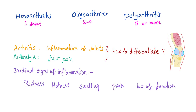How do you differentiate between arthritis and arthralgia? Use the physical exam and the cardinal signs of inflammation: redness, hotness, swelling, pain, and loss of function — in Latin: Rubor, Calor, Tumor, Dolor, and Functio Laesa. Arthritis shows these cardinal signs of inflammation, while arthralgia has no cardinal signs of inflammation except for pain.